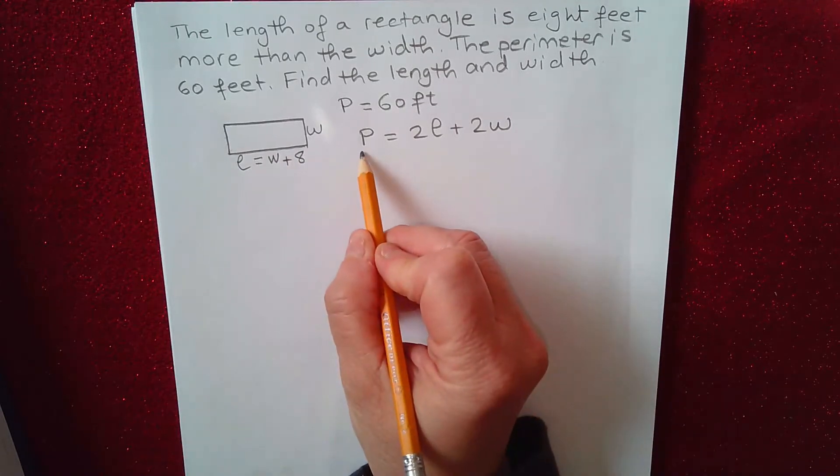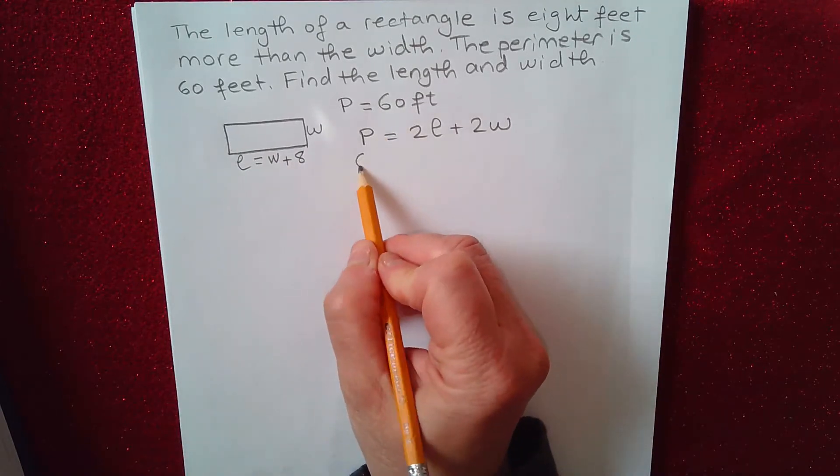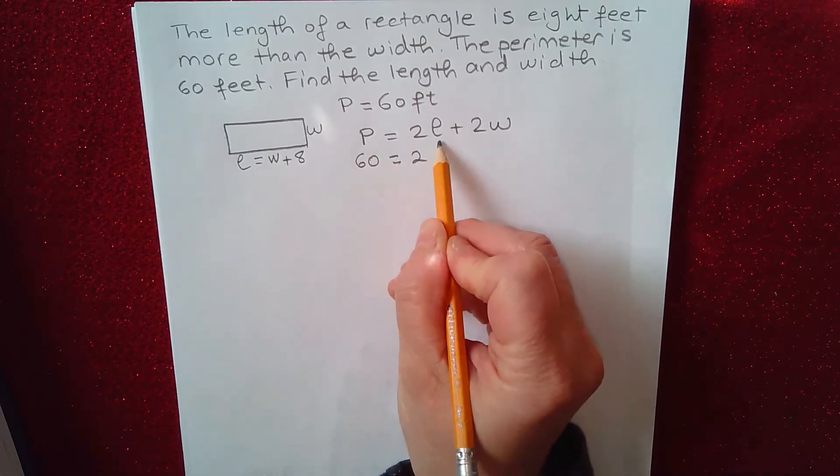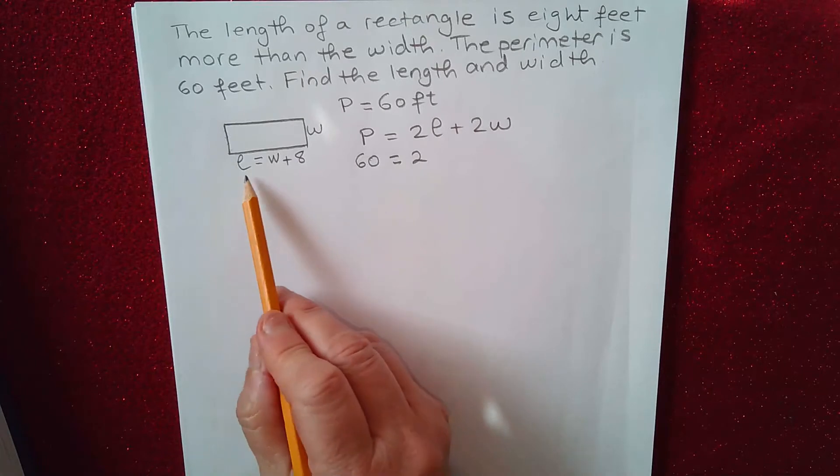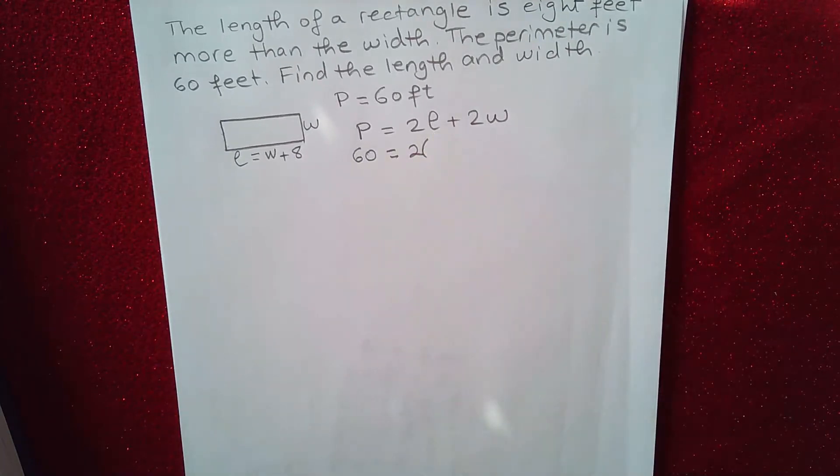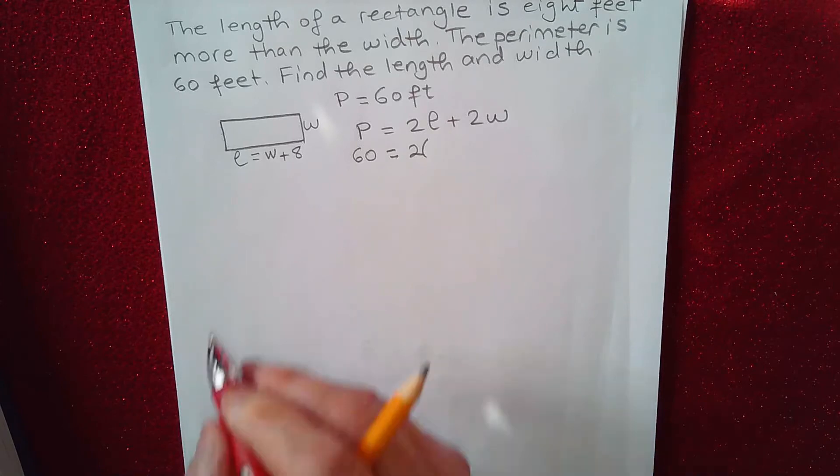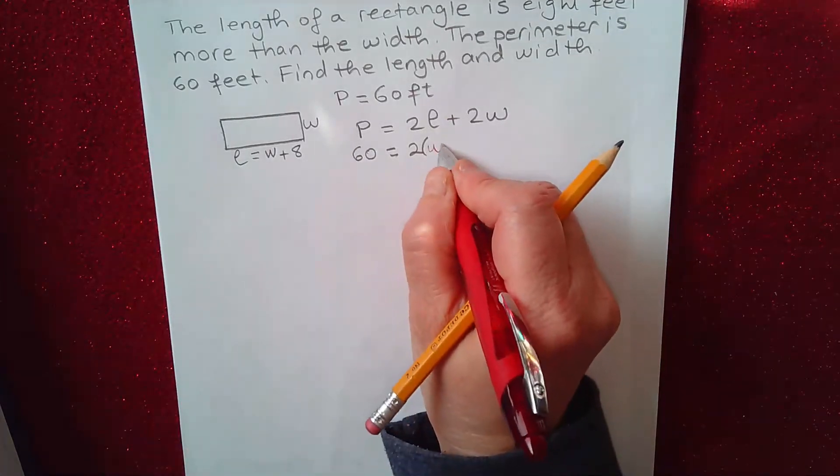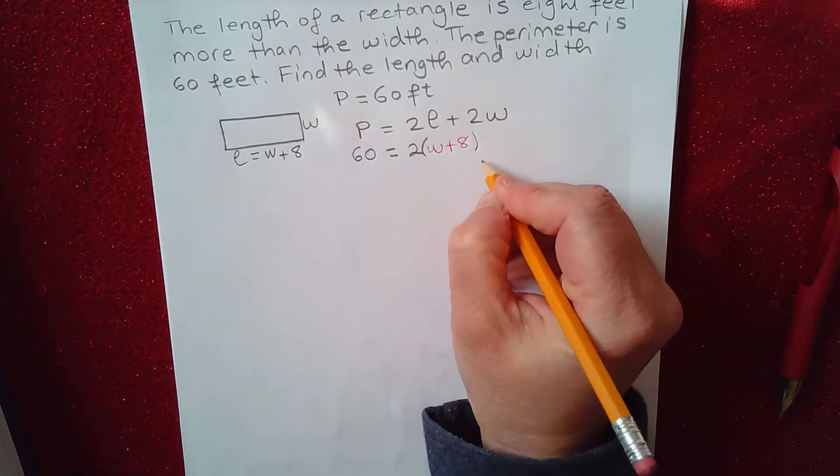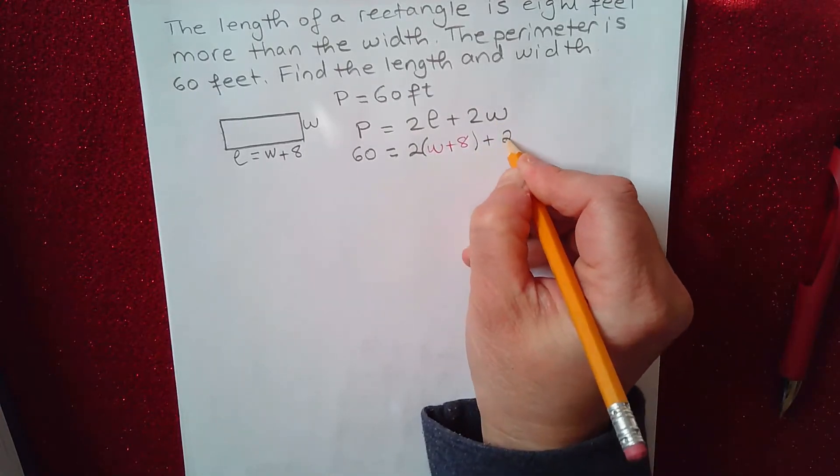They've given me the perimeter already, and that's 60 feet. And I don't have the value of L, but I have the value of L in terms of W. So I can replace L with W plus eight. And this remains the same, 2W.